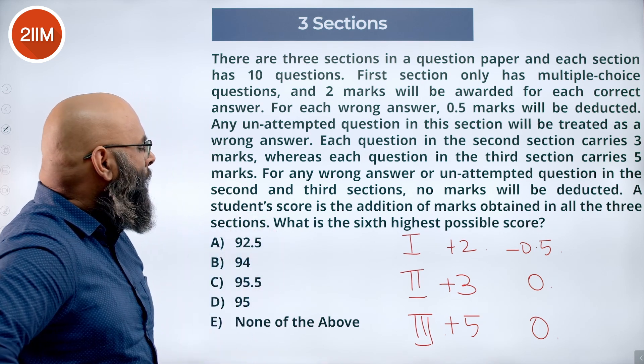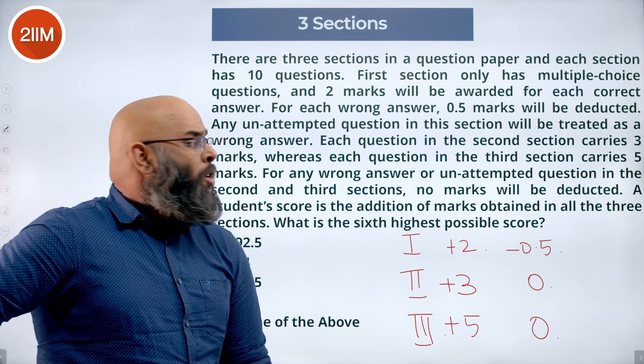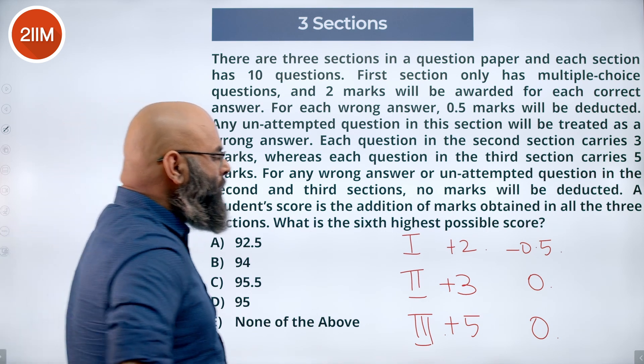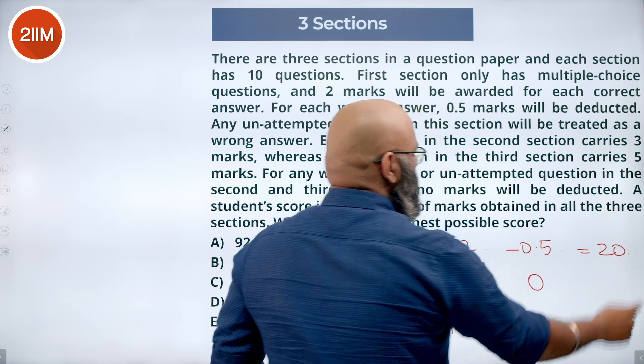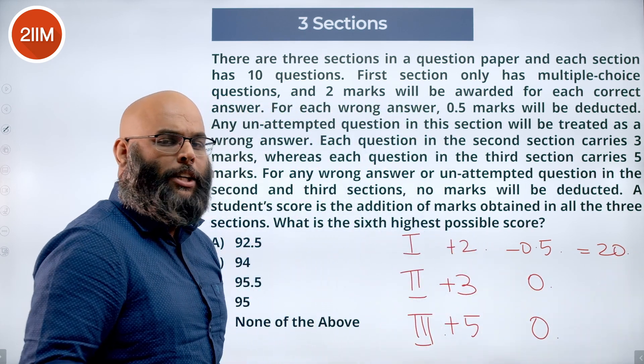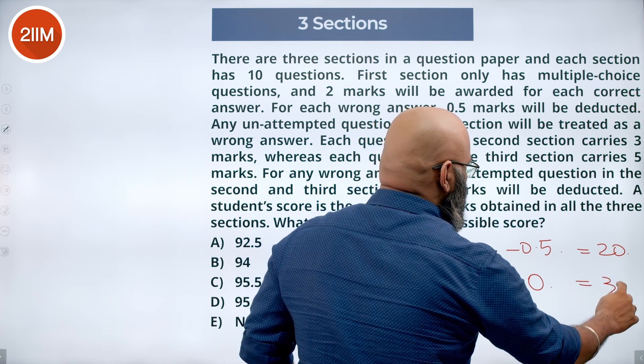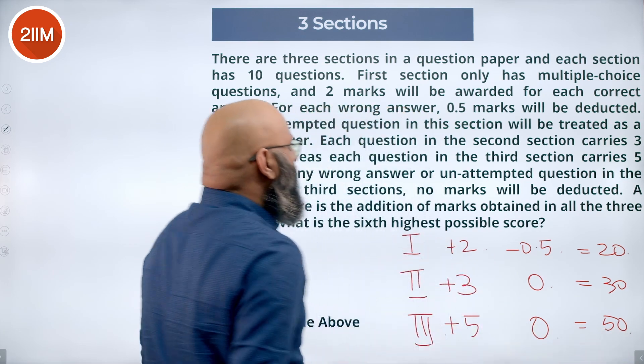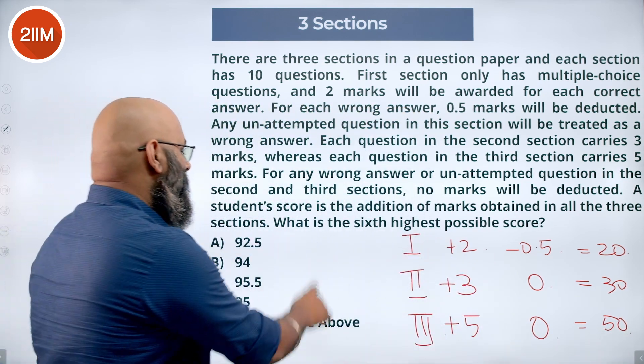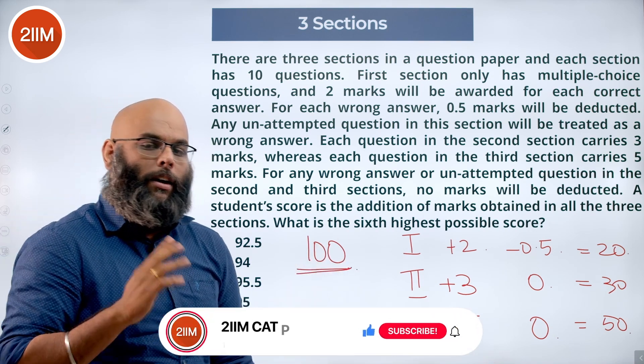Now what will be the highest possible score in all three sections put together? If I notice the first section, if I get all the questions right, you will be awarded 20. The second section, you get all 10 right, you get 3 into 10 that is 30. 10 into 5 gives me 50. So the highest mark that we can get is 100. The highest possible mark is going to be 100.